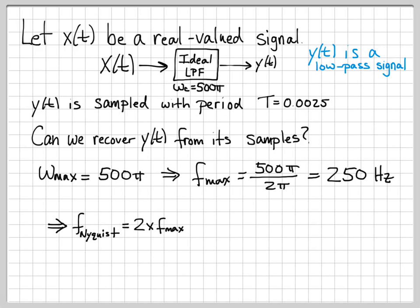What about the Nyquist rate? If our maximum frequency at most is 250 hertz, we know how to compute the Nyquist rate. It's just two times this maximum frequency. So f Nyquist is 2 times f max, which is equal to 2 times 250, which is 500 hertz.